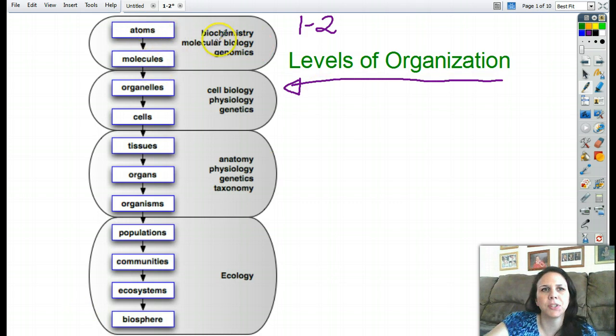So like here, this little diagram shows you how to break it up. So if you like to study atoms and molecules of living things, then biochemistry, molecular biology, or genomics might be what you enjoy most of. Say you want to pursue this in college, there's where you would go.